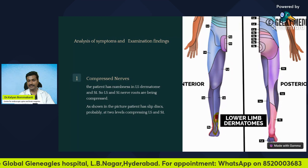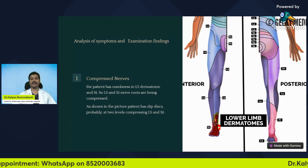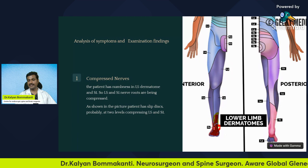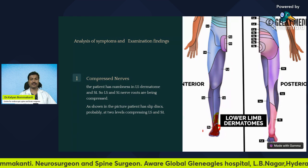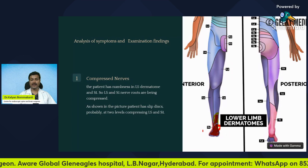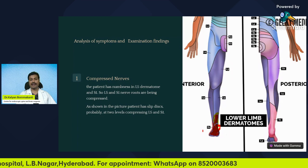As per the history, this patient has a decrease in sensation in this area. My spinal cord has each nerve supplying one particular part of the skin — these are called dermatomes. We can see the patient has decreased sensation in the L5 dermatome and S1 dermatome. So from the symptoms and examination findings, we determined that the patient's left side L5 and S1 nerves are getting compressed.